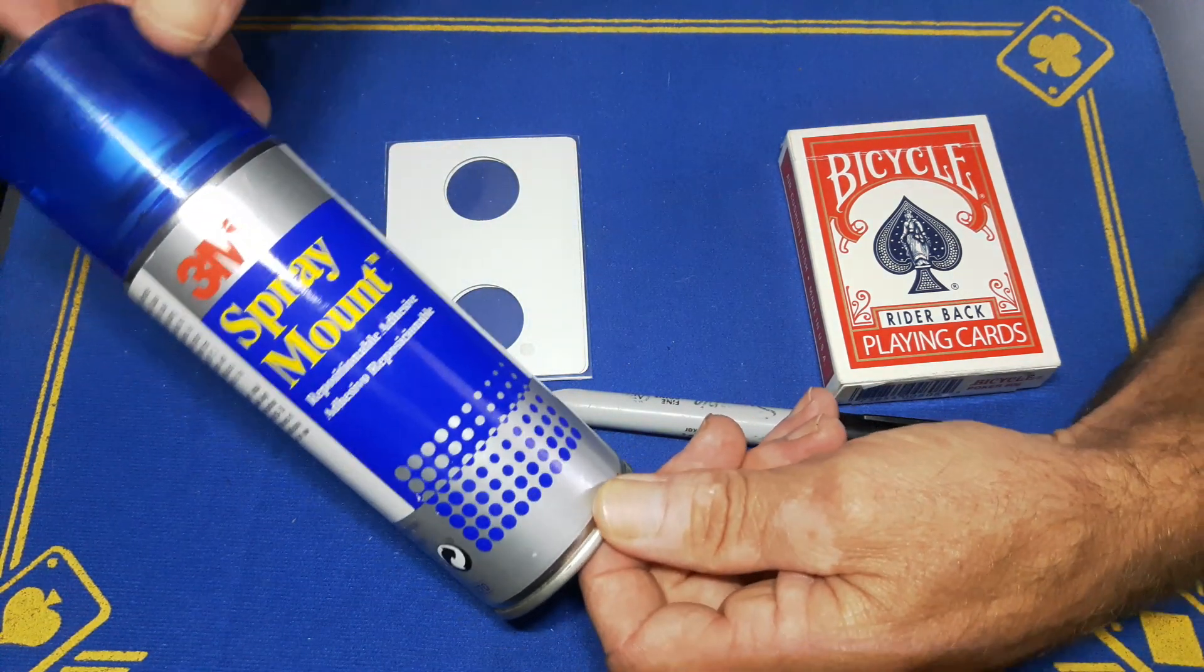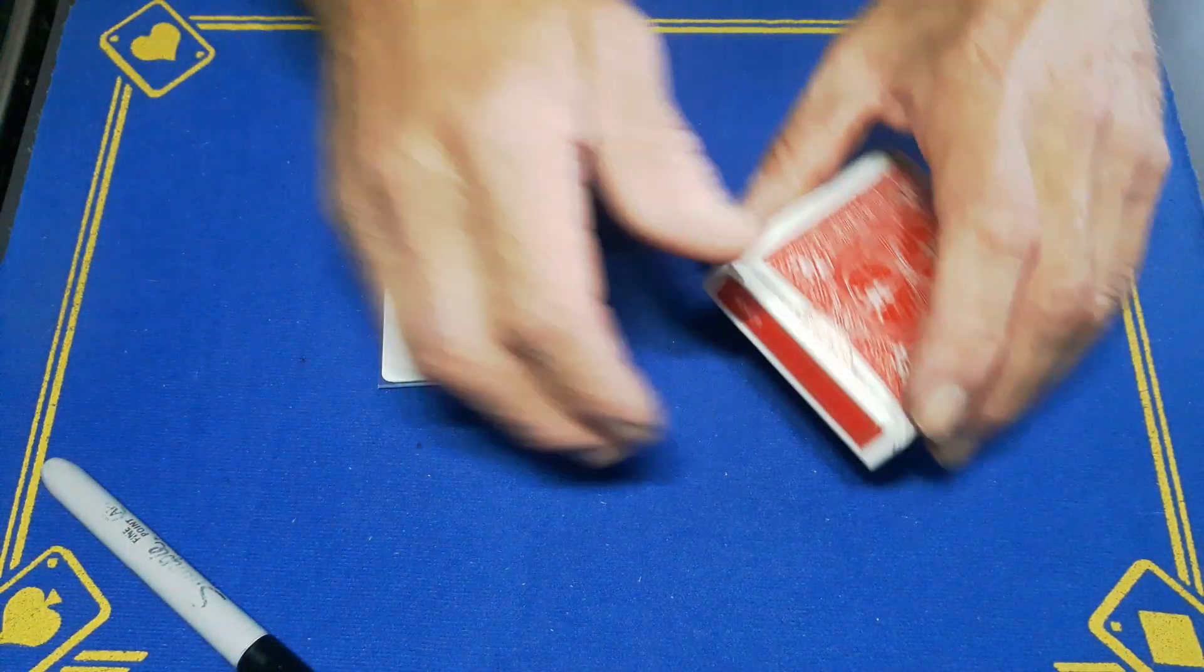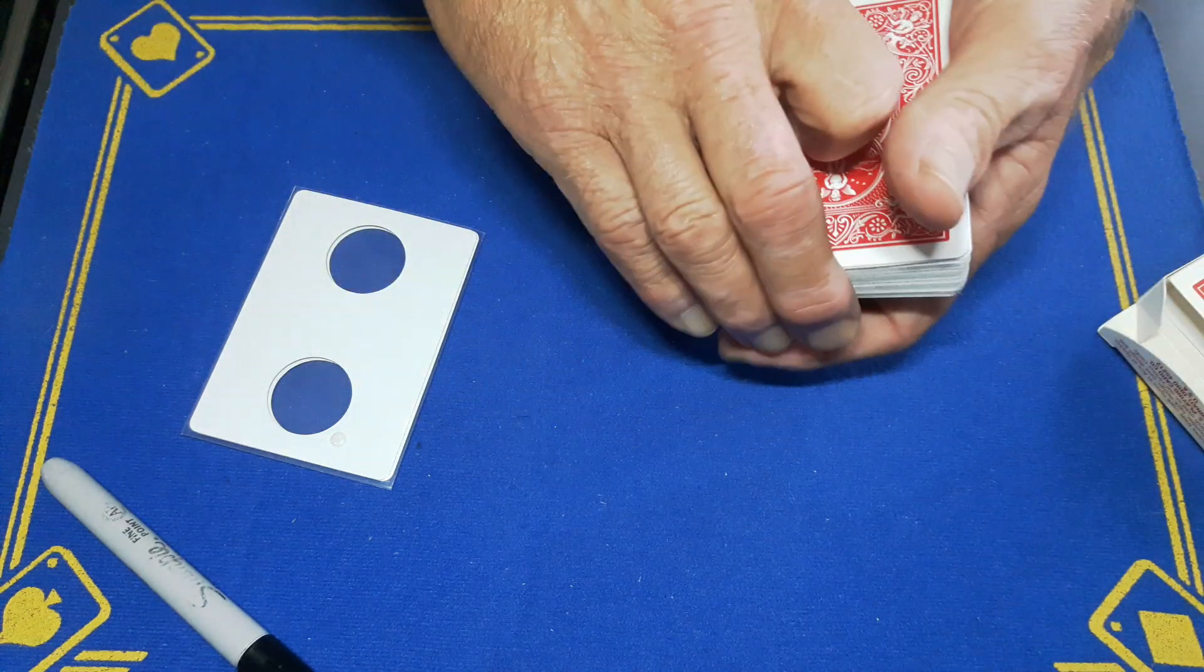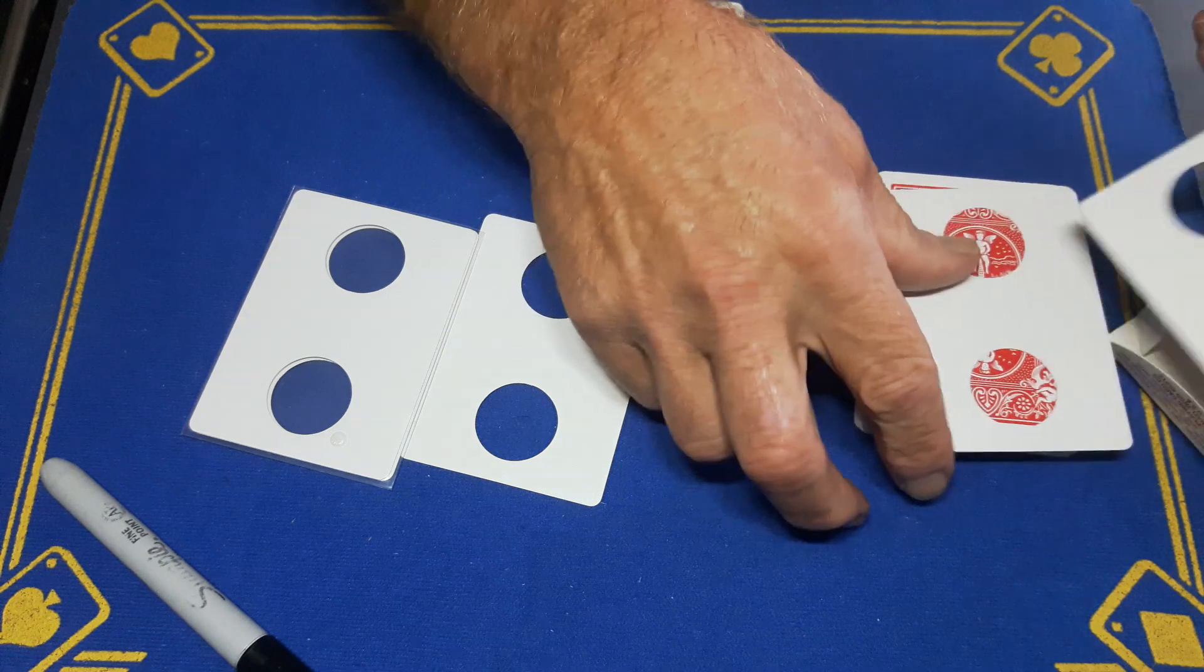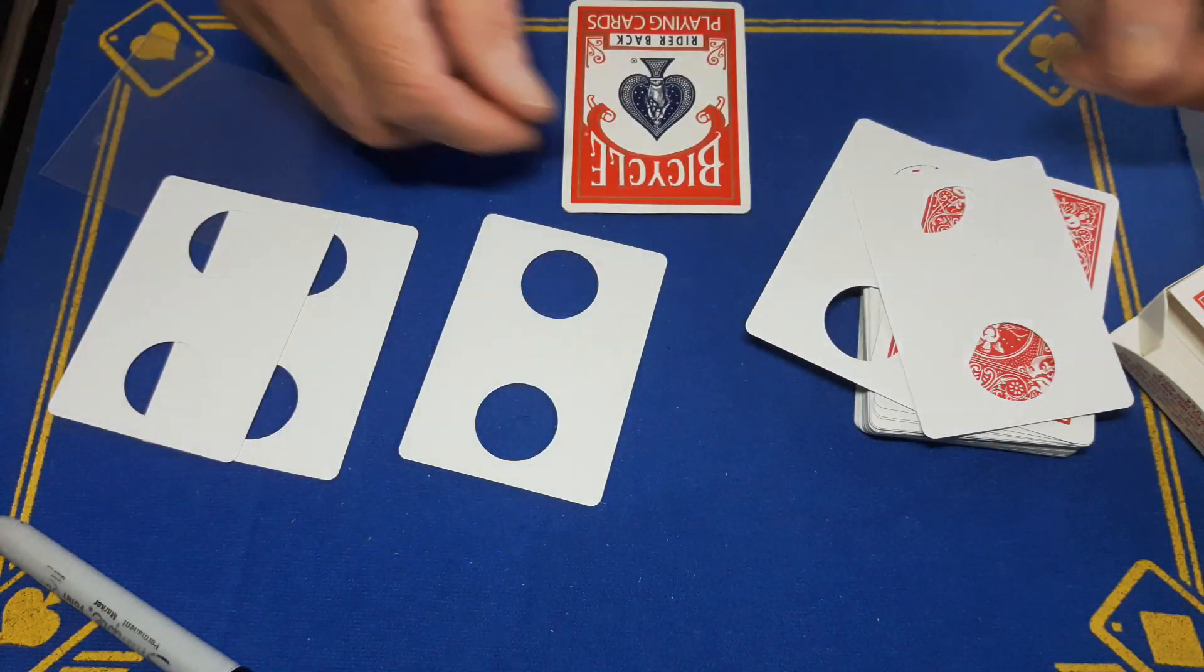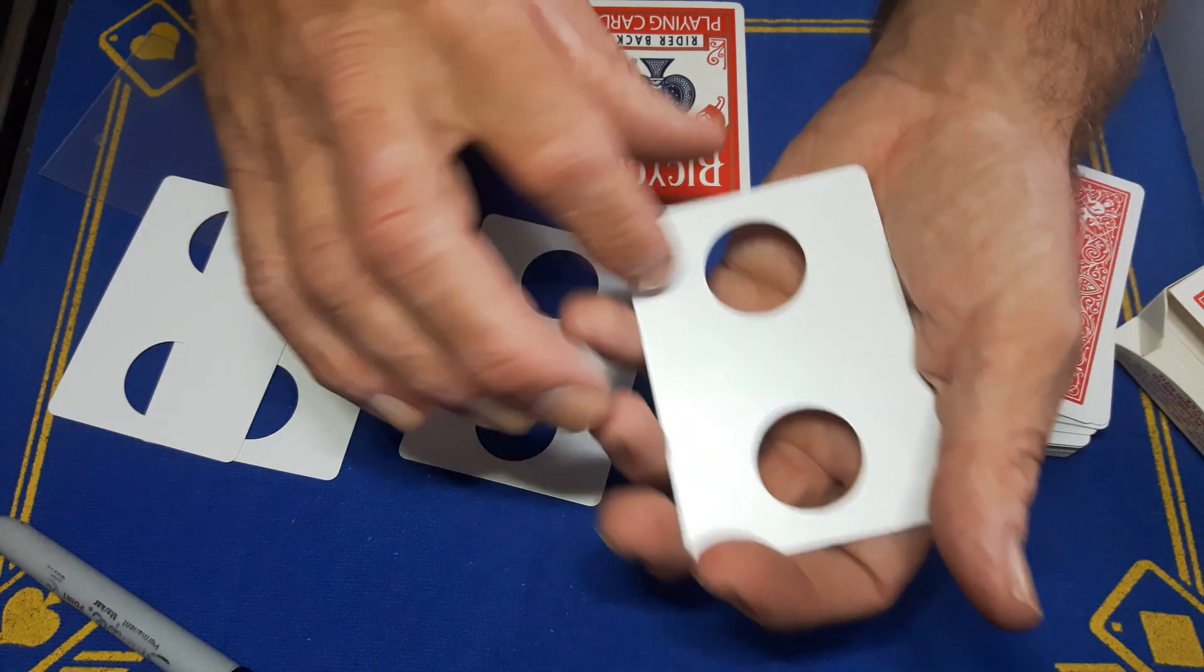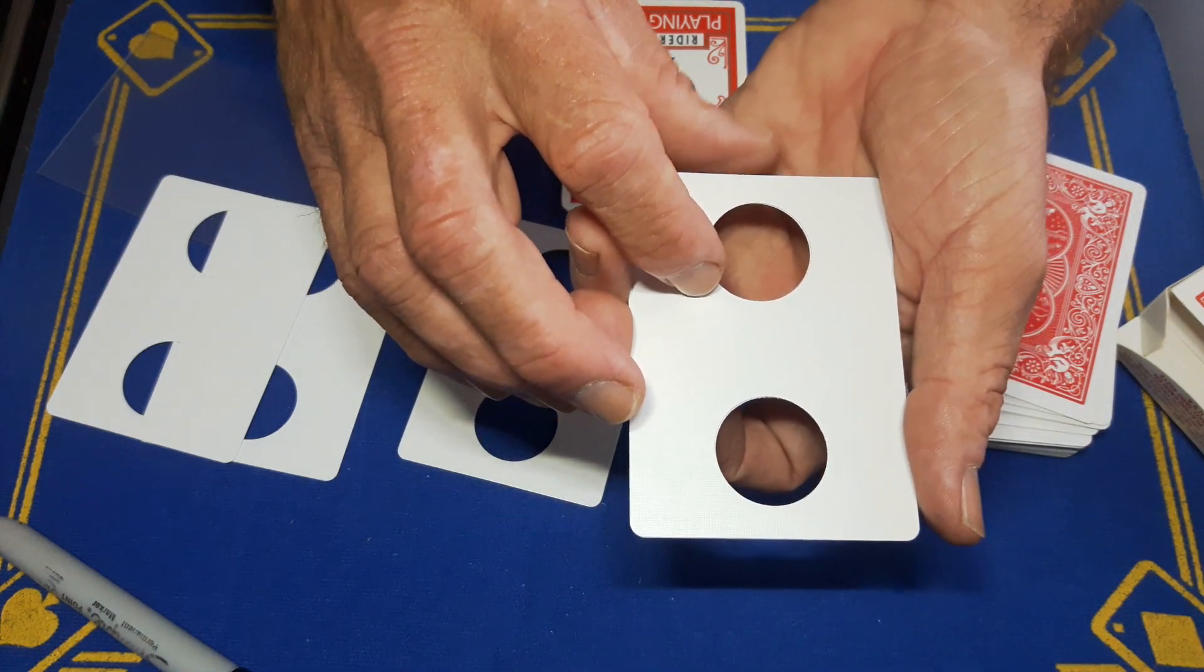So I'm using this 3M Photomount spray. What we've got is a few gaffs and gimmicks going on. I've got a top of the box gaff, and I've got five blank cards with holes cut through them. These two blanks with holes punched through them I've used a 25 mil or 20 mil hole punch.